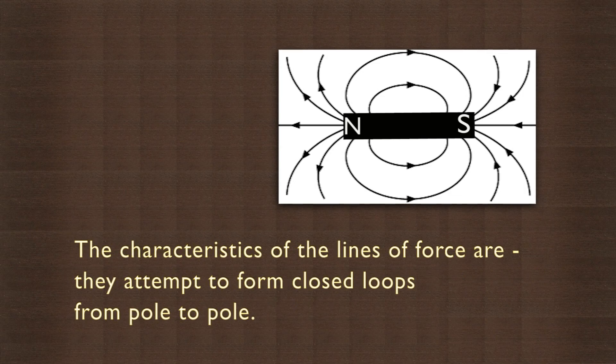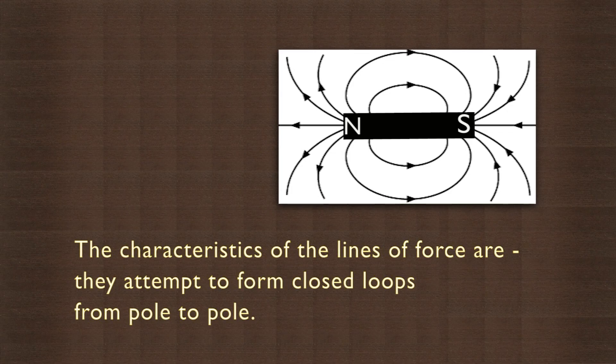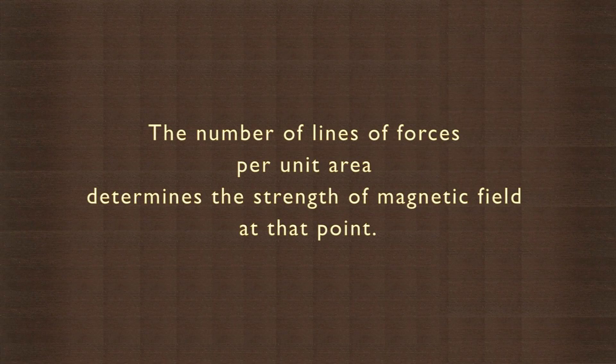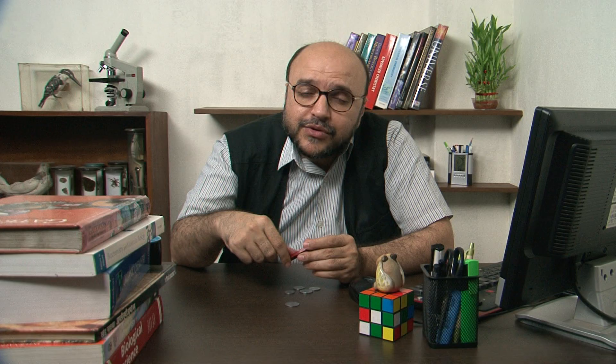The characteristics of the lines of force are: they attempt to form closed loops from pole to pole; they never intersect; they all have the same strength. The number of lines of force per unit area determines the strength of the magnetic field at that point. Did you know that the Earth also has a magnetic field? Go and find out more about it.